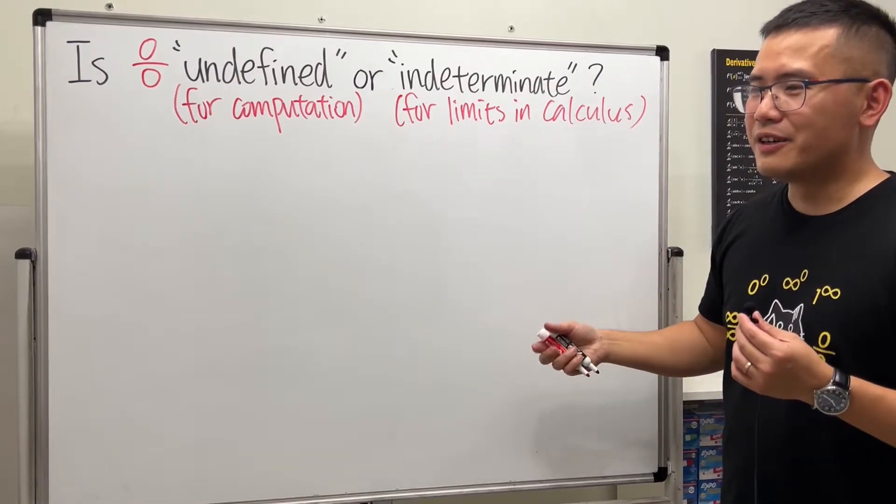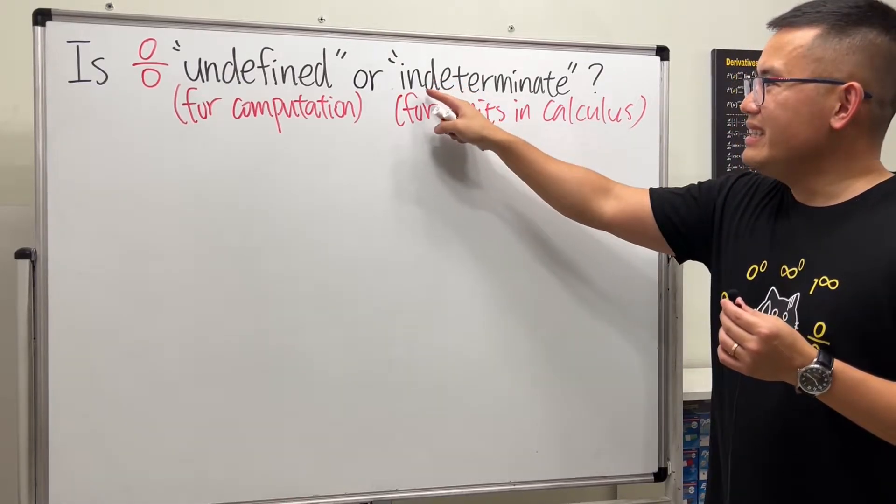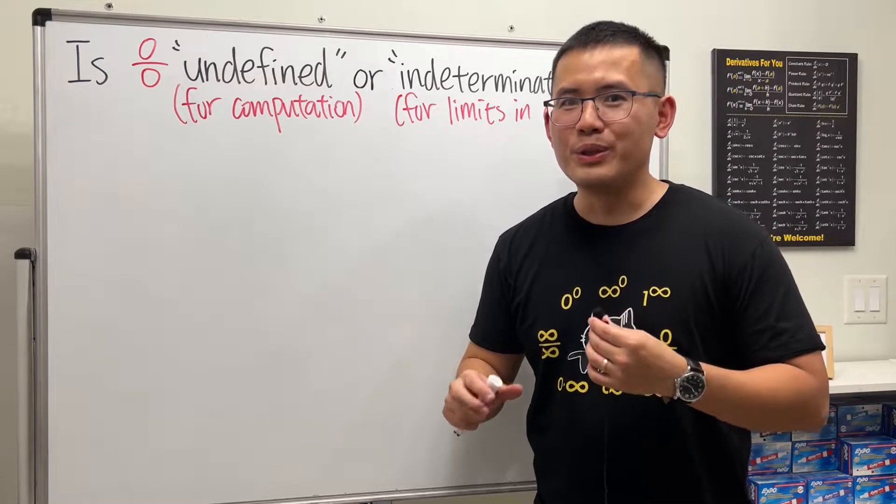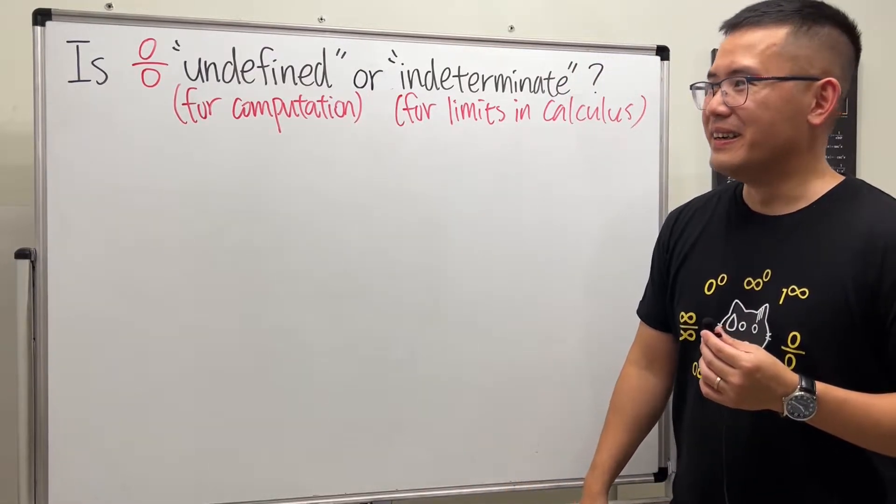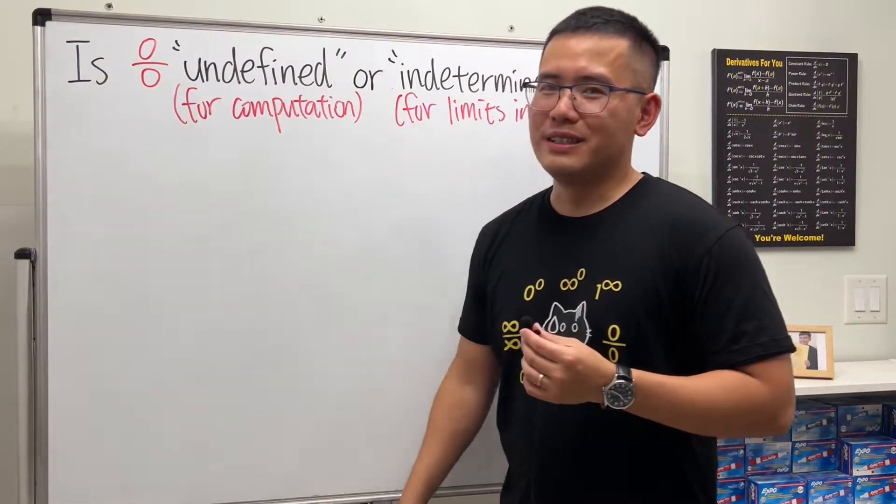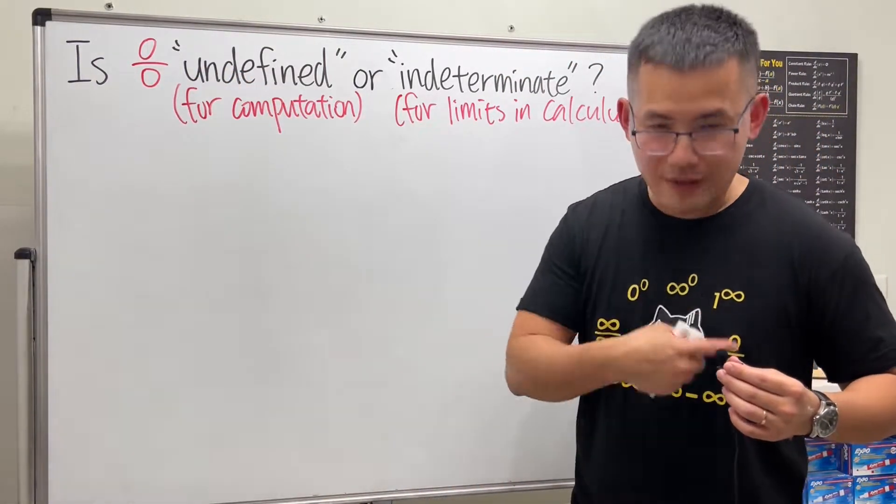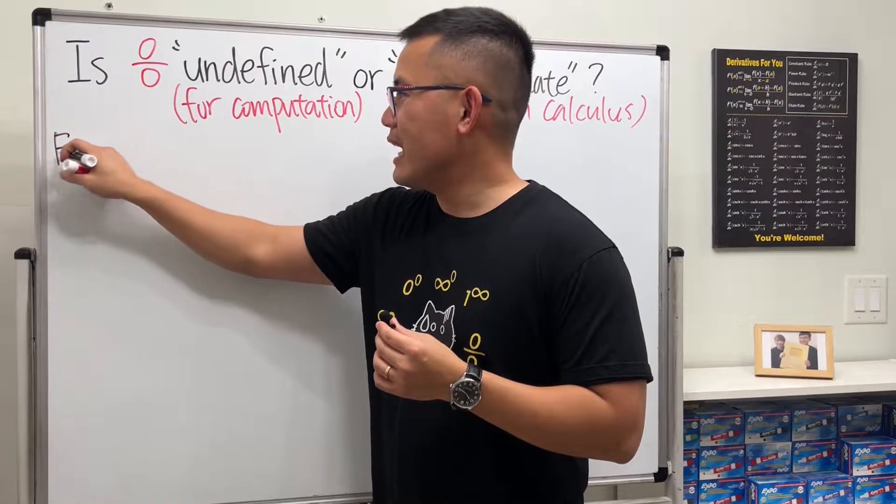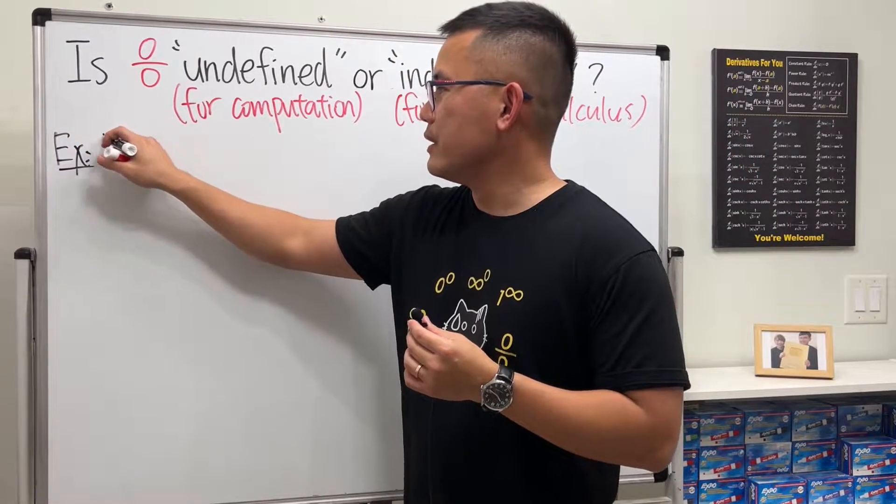But you never write down indeterminate as an answer for limit questions. Indeterminate is just a form that indicates that we have to do more work in order to determine the answer. And zero over zero is one of the indeterminate forms, and we have a total of seven right here.